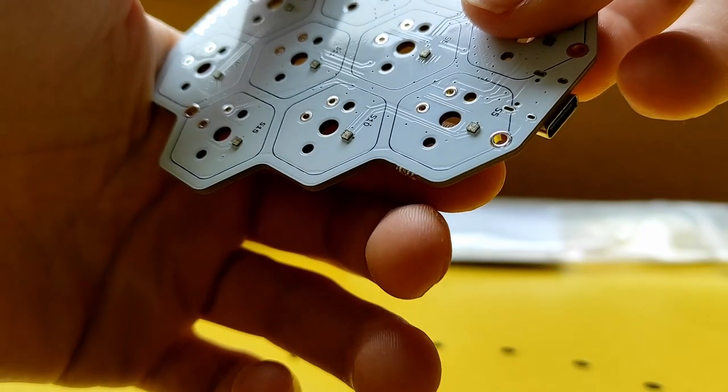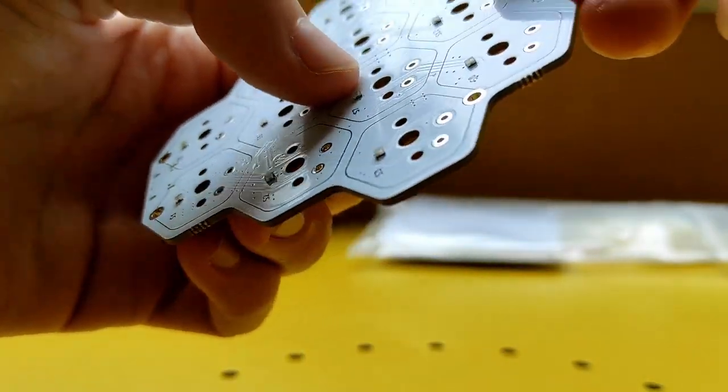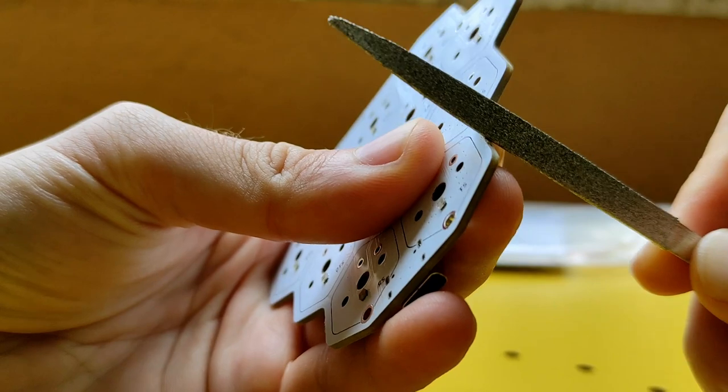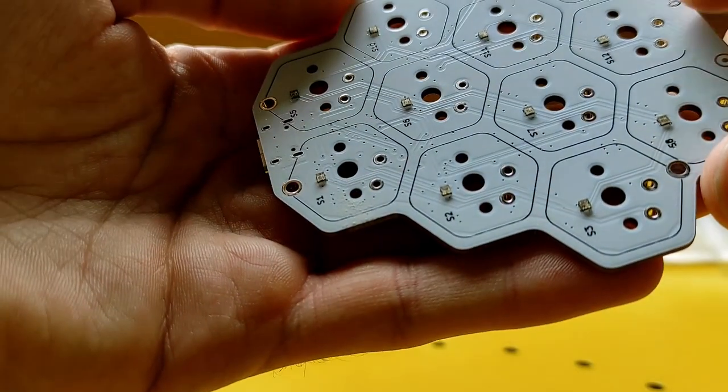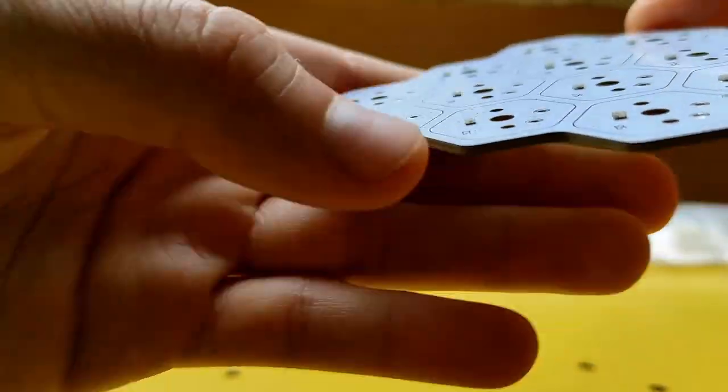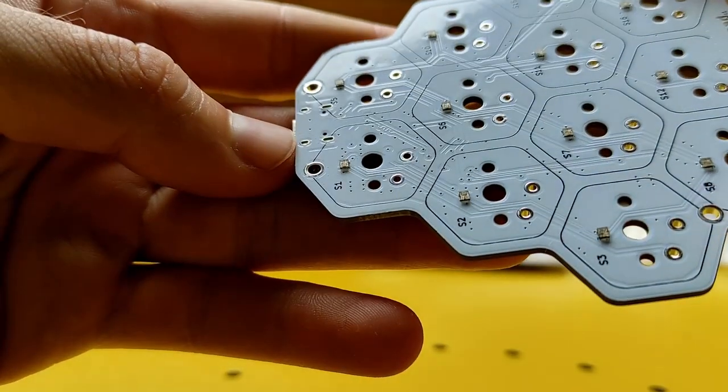Before getting started, if you want to remove these little mousebites that can be found on the PCB, I would recommend doing that as the very first thing with a little file. It's best to do this outside because the dust can be harmful to your lungs.